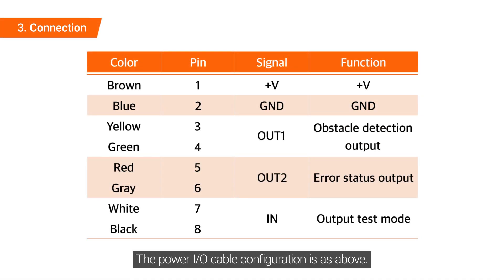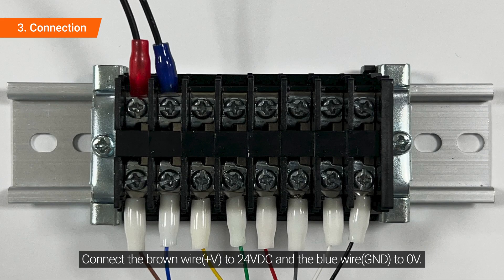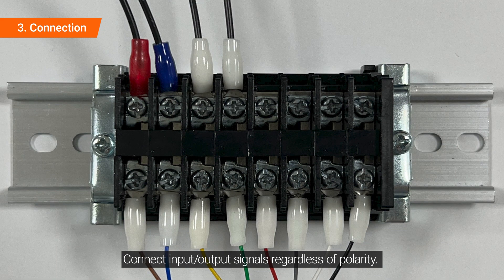The power I/O cable configuration is as shown. Connect the brown wire to 24V DC and the blue wire to 0V. Connect input-output signals regardless of polarity.